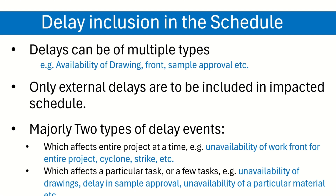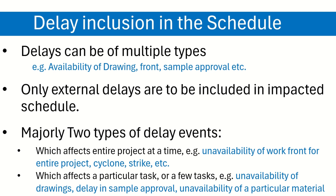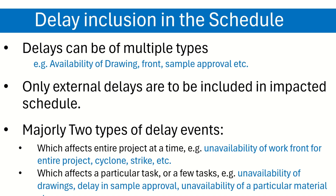While including delays in your schedule, keep in mind that delays can be of multiple types — availability of drawings, front or sample approval, force majeure, etc. Only external delays are to be included in the impacted schedule, as you will not get an extension of time for delays attributable to your own agency. You will mainly find two types: those affecting the entire project at once, such as unavailability of work front, cyclone, or strike; and those affecting a particular task or few tasks, such as unavailability of a particular drawing, delay in sample approval, or unavailability of a particular material.